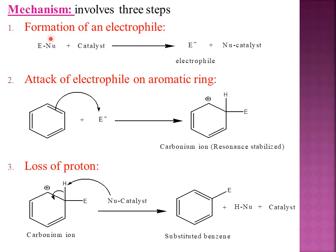Coming to the formation of electrophile: whatever reagent we are using combines with the catalyst, and by utilization of the catalyst, the reagent is dissociated into electrophile. The nucleophile is taken up by the catalyst, and the formed electrophile from this step enters into the second step.